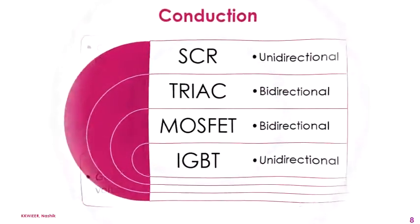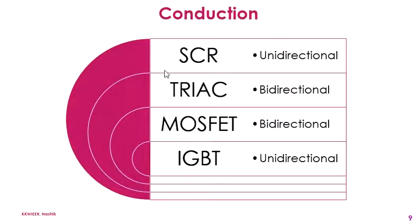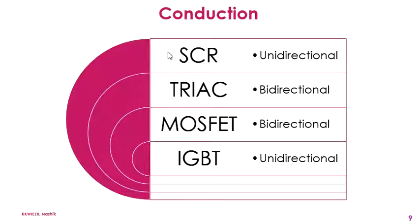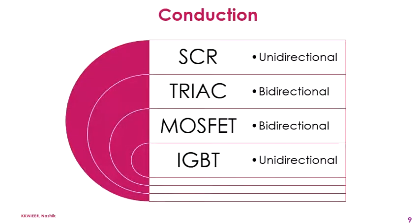Now, how does conduction happen in these four devices? In SCR and IGBT, conduction is unidirectional — that means in their V-I or static characteristics, only the positive or first quadrant is used. Whereas in TRIAC and MOSFET, they are bidirectional conducting devices, with the first and third quadrants being the working quadrants.